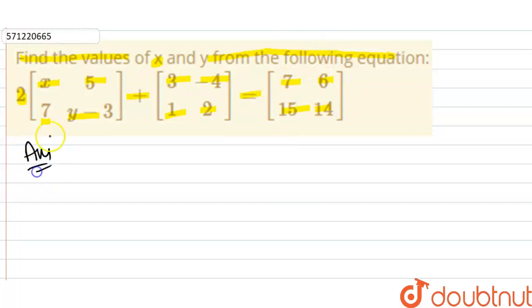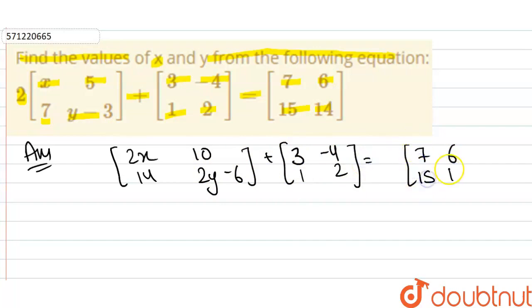First, multiply these two matrices. We get 2x, 2 into 5 is 10, 2 into 4 is 14, and 2 multiplied with y minus 3 gives 2y minus 6. Plus matrix 3, minus 4, 1, 2, that equals our matrix 7, 6, 15, and 14.